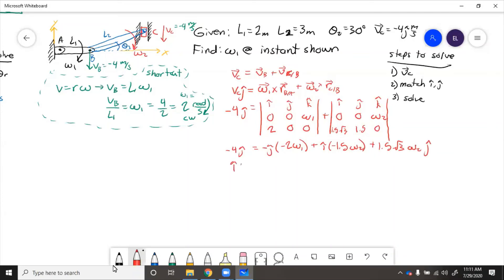So if we match the i, 0 equals negative 1.5 omega 2. So omega 2 equals 0 radians per second. At this instant, that rod has no angular velocity.